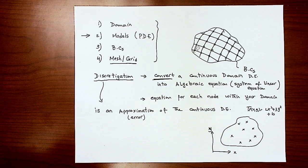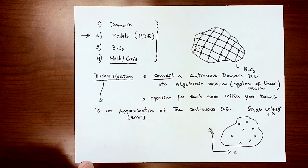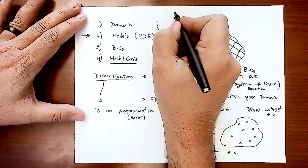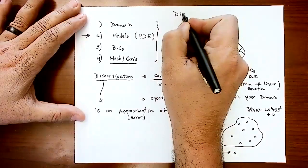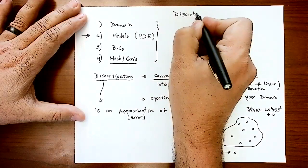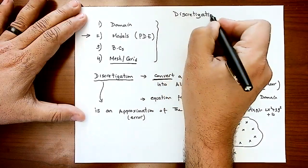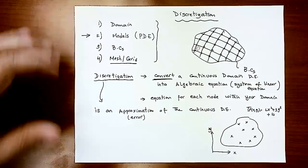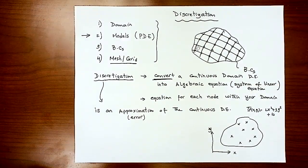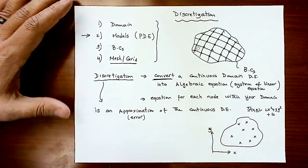So the definition of discretization is to approximate your continuous domain into a series of algebraic equations, then solve that numerically to get an approximation solution. There are three major methods we use to convert differential equations into algebraic equations.